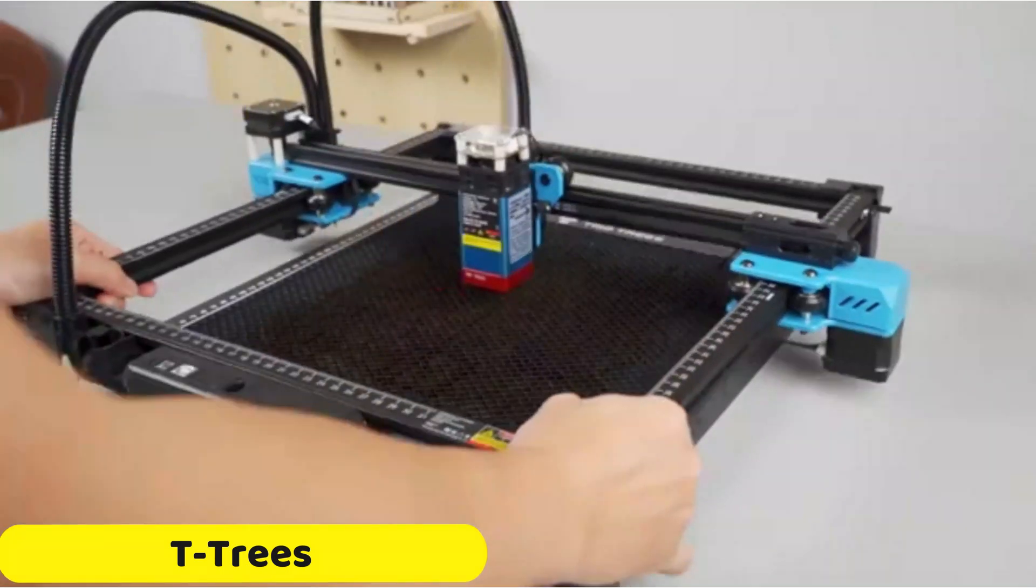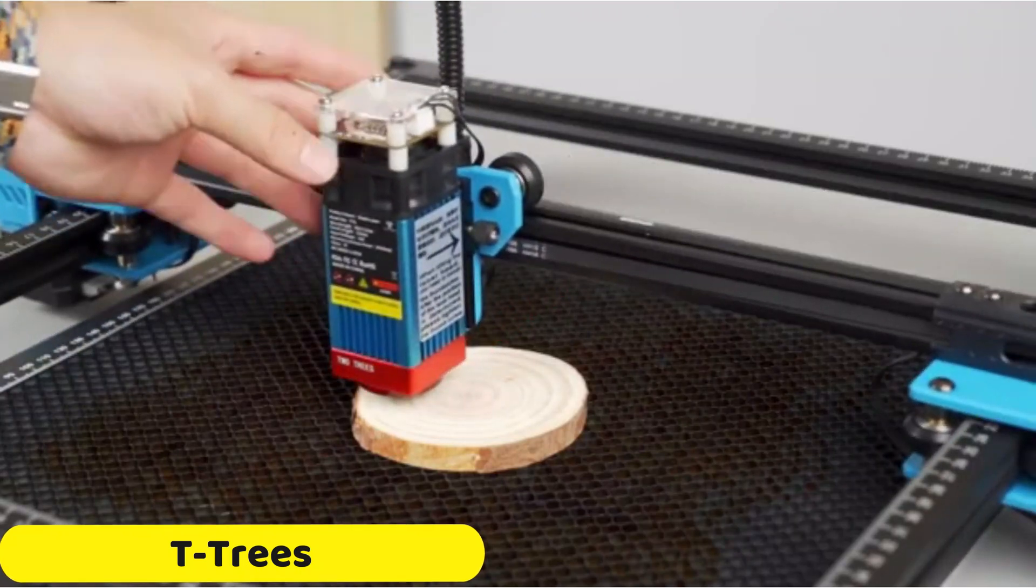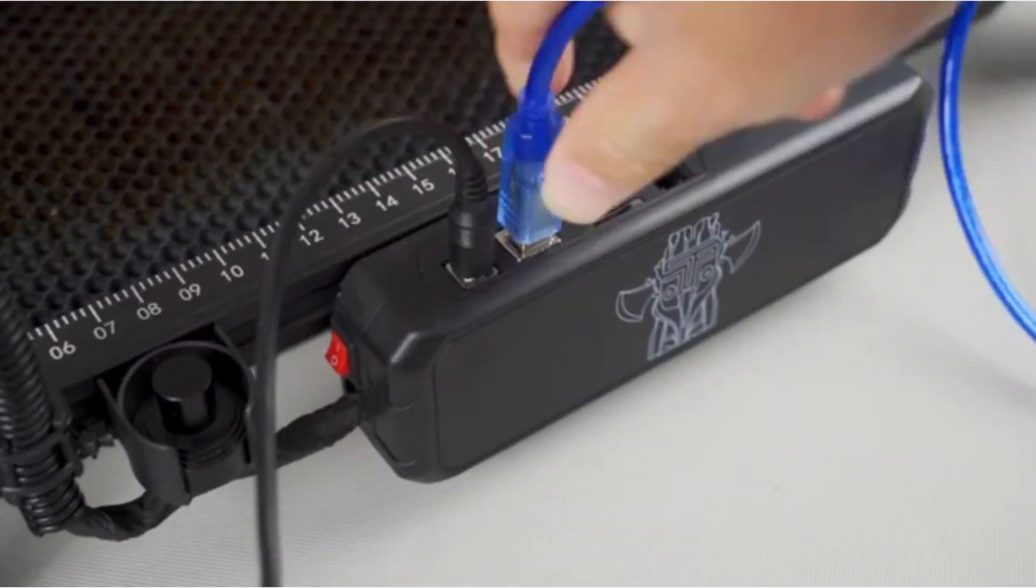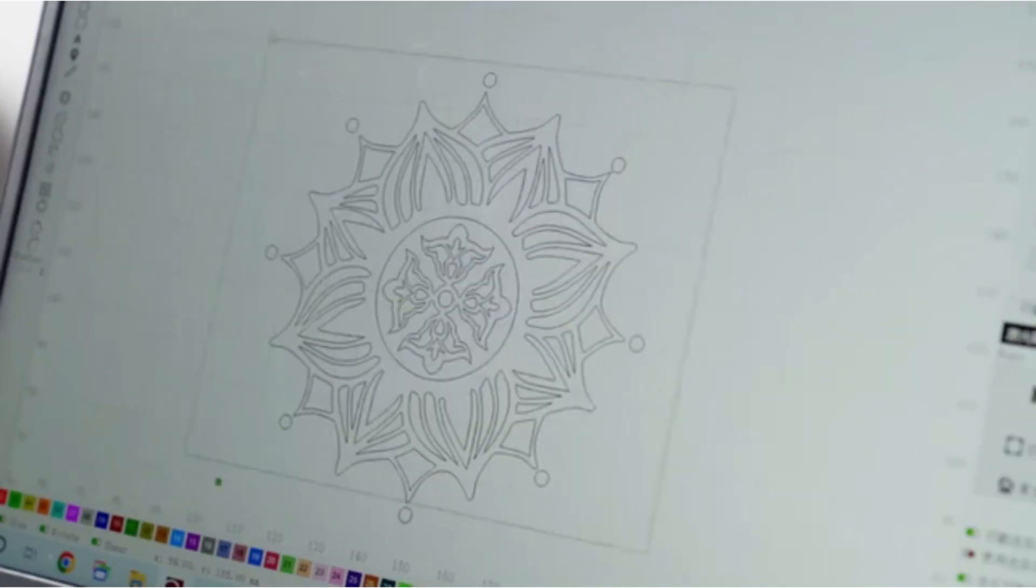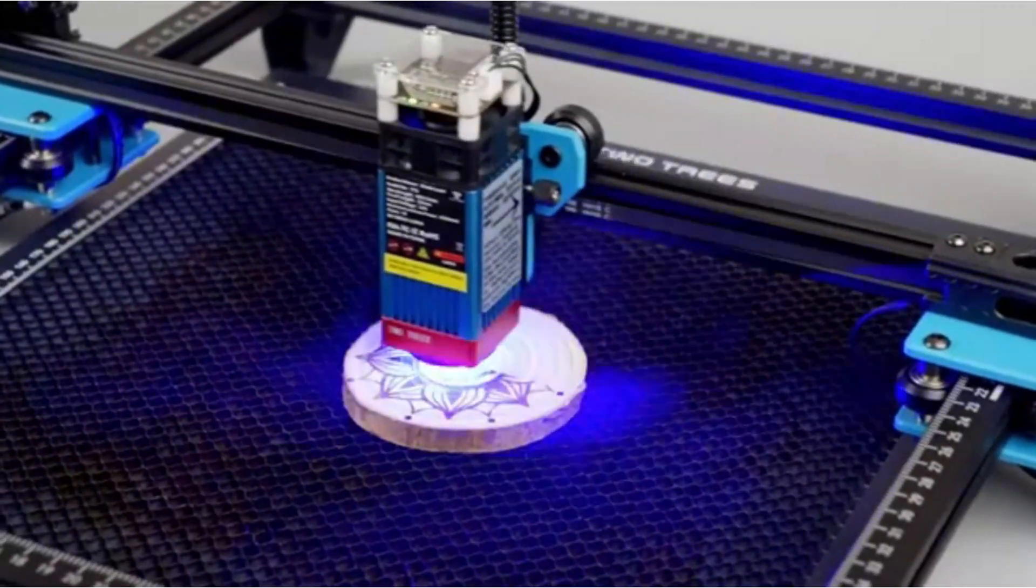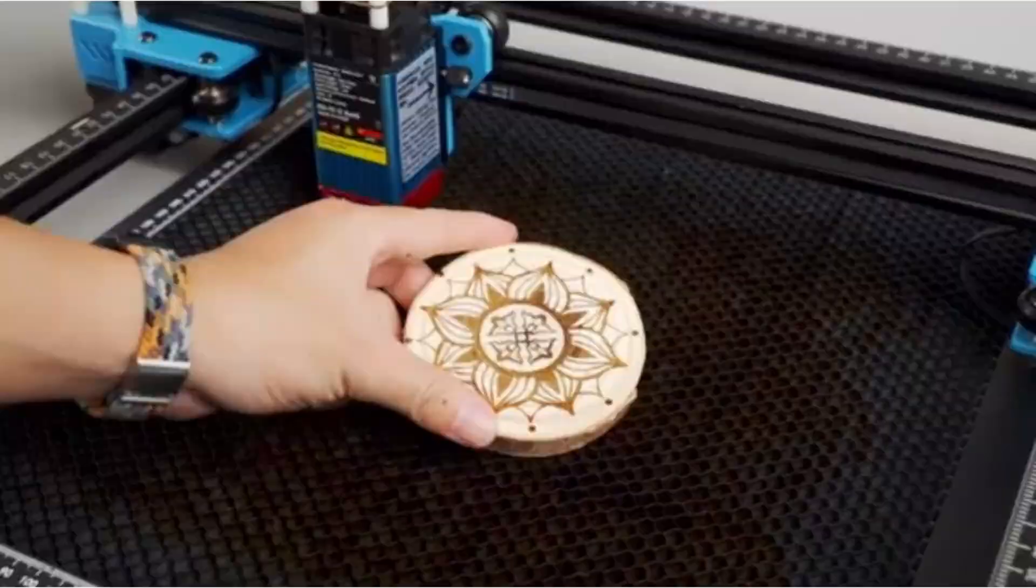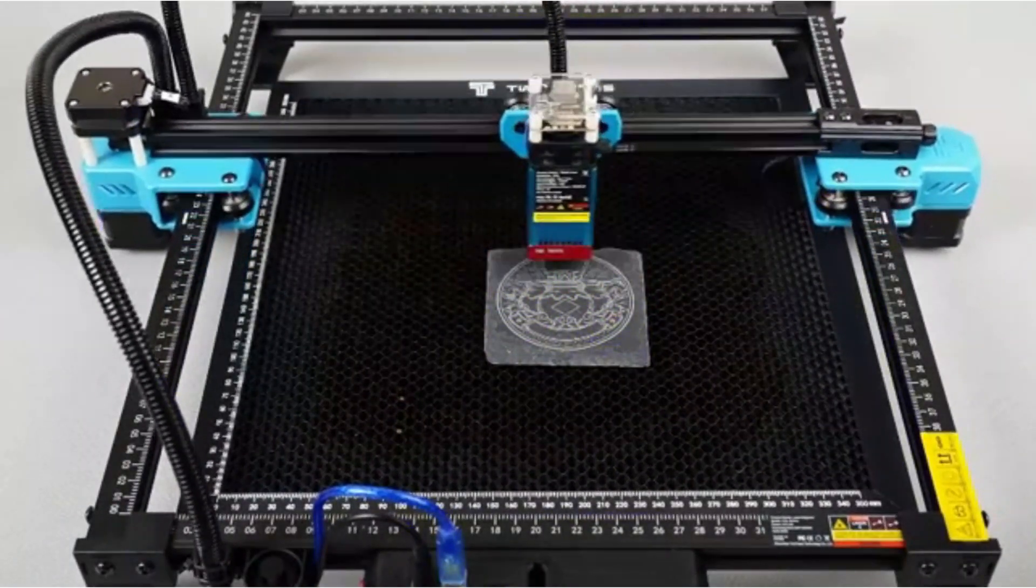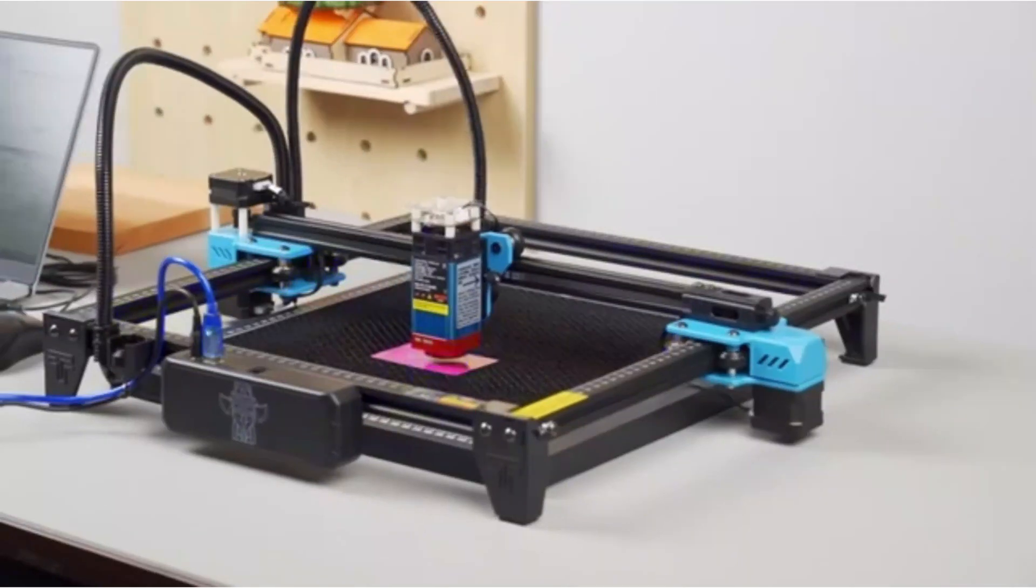Number 1: T-Trees Laser Engraver. The T-Trees Laser Engraver is a cutting-edge device that combines advanced technology with user-friendly features to enhance your crafting experience. Its smart device compatibility allows you to control it from your smartphone or tablet, giving you full command of your engraving projects.